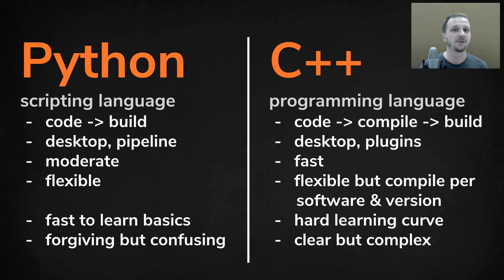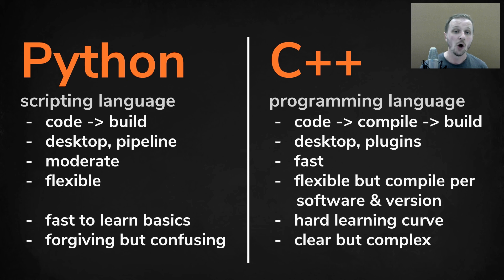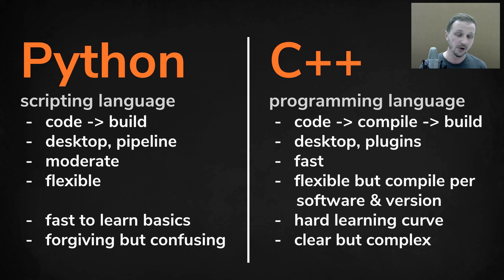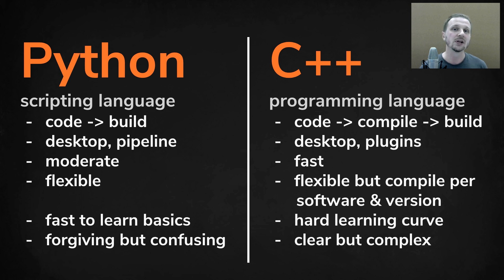The benefit of Python is that it's very flexible, so you can write code and use it across all the DCC packages and only need to adapt for the specific API of each package. While C++ is also flexible, you need to compile every time for every software and every version. You can't use a compiled version from Maya 2015 in 2016 — you need to recompile for 2016 again.